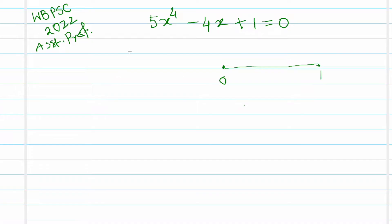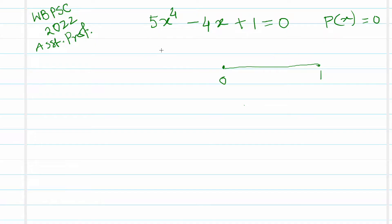The given polynomial is p(x) = 0, and we have to find how many roots of this polynomial lie between 0 and 1. The problem is tricky — you cannot simply solve this fourth-degree equation to find all roots and then check which lie in [0, 1].